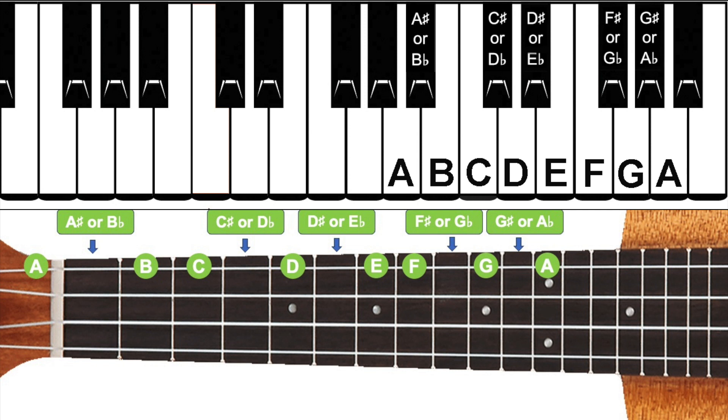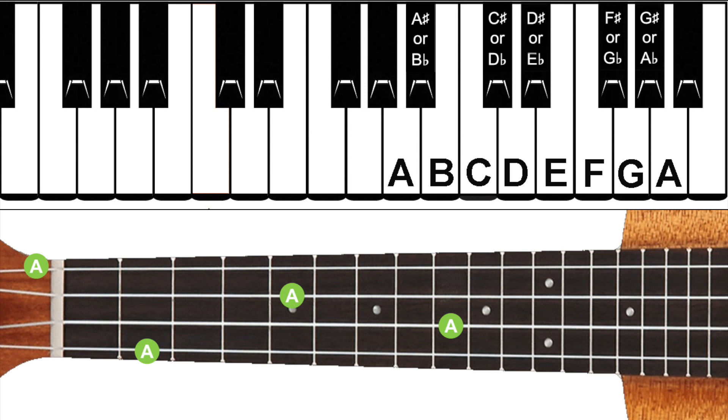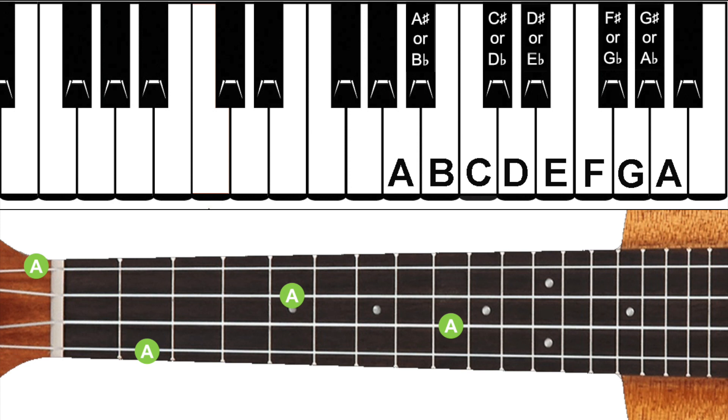As I said earlier in the tutorial, the A note can be found on all four strings of our ukulele, as per the diagram. This is also the same for all the other notes of the musical alphabet, as shown here.